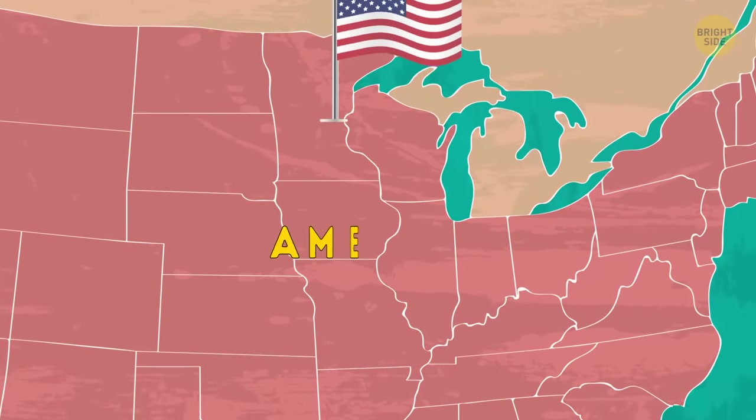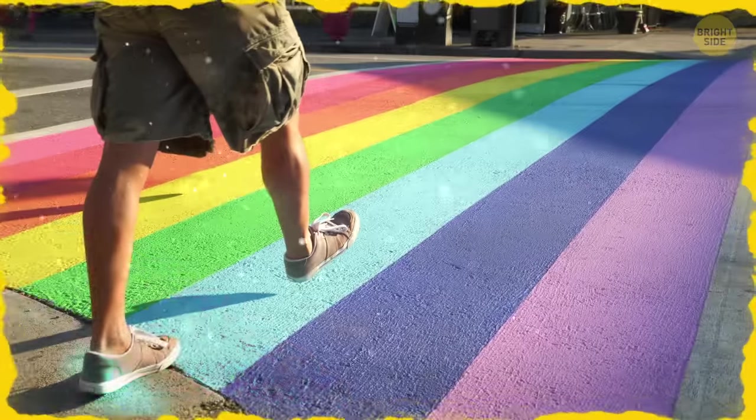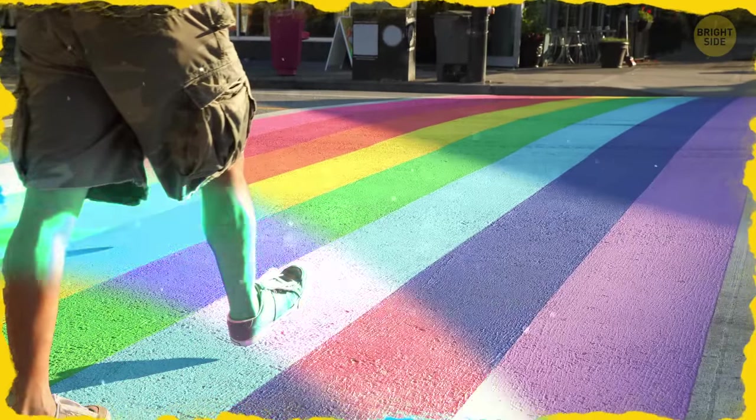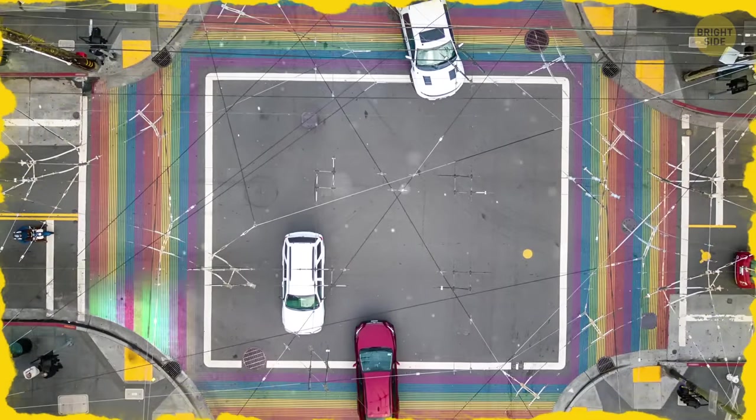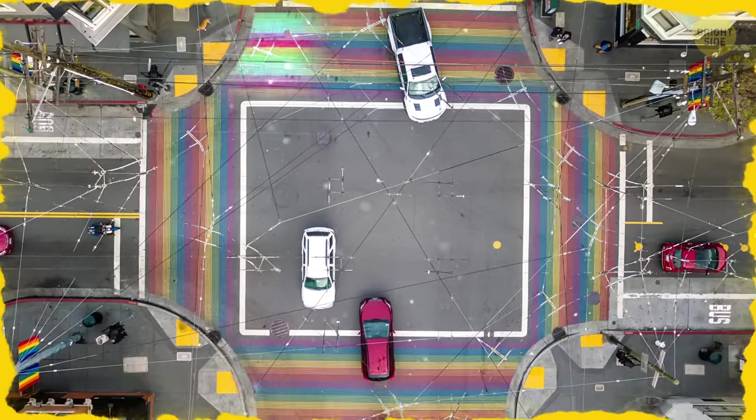A few cities, like Ames, Iowa and Atlanta, Georgia, have gotten creative and painted rainbow crosswalks. Don't worry though, as long as they use light and dark contrasting stripes, they're safe too.